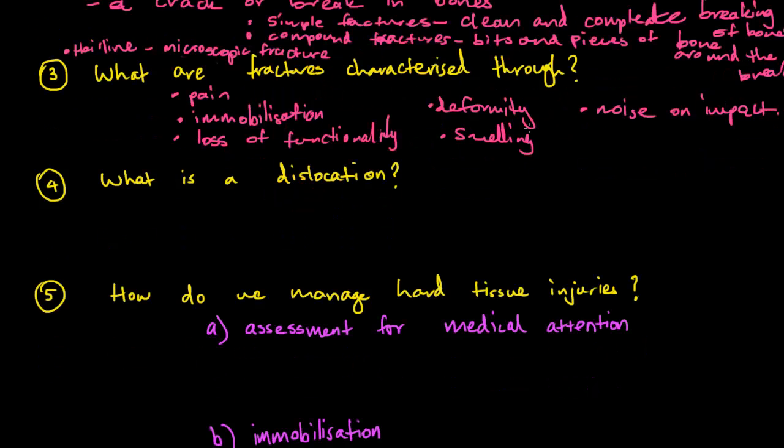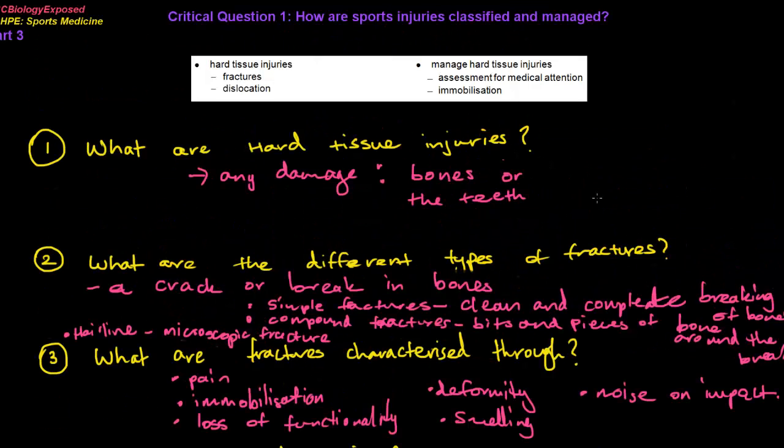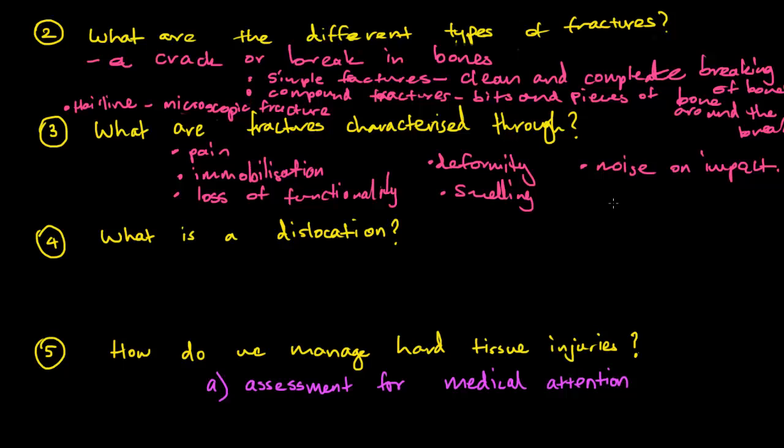So now we'll move on to dislocations. We've covered fractures in not that much detail, but just pretty much anything you need to know for the dot point. And now for dislocations, it's slightly different to a fracture. Well, it's actually very different to a fracture. Because the dislocation isn't actually the breaking of the bone, but rather when the bones or joints are forced out of place.